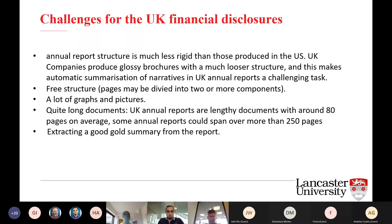What are the main challenges for UK financial disclosures, and why do we choose to work with UK data? Simply because UK data comes in a less rigid format than the US one, so we have annual reports in plain text format. We also have lengthy documents — the average length of a UK annual report is 50K tokens and around 80 pages, and it can reach up to 150 pages, which makes the task of extracting a good summary very challenging.